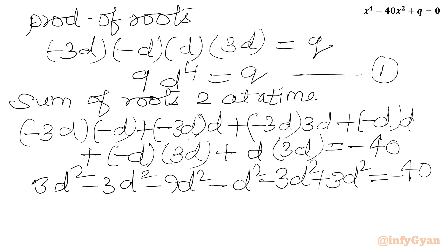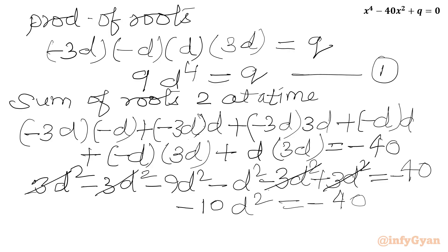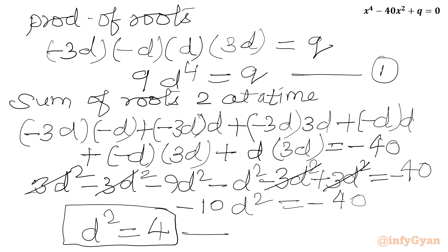After cancelling the +3d² and −3d² terms, we are left with −10d² = −40. Dividing both sides by −10 gives d² = 4. This is equation 2.